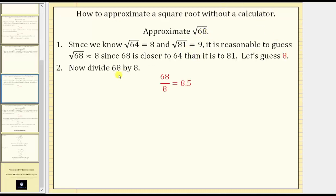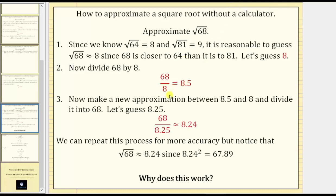Step two, we divide the radicand of 68 by 8. 68 divided by 8 equals 8.5. Step three, we now make a new approximation between the quotient of 8.5 and the original guess of 8, and then we divide this into 68. Let's guess 8.25, because 8.25 is between 8.5 and 8. And now we divide 68 by 8.25, which gives us approximately 8.24.